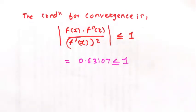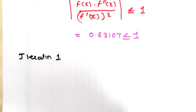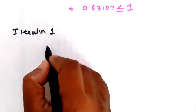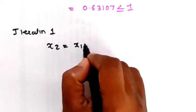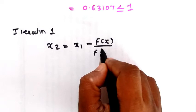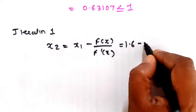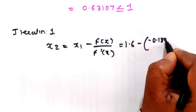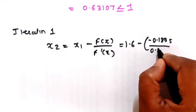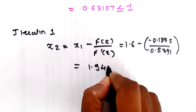Now we go to the iterations. Iteration 1: calculate the new root x₂ using the formula x₂ = x₁ − f(x₁)/f'(x₁) = 1.6 − (−0.1835)/0.5391 = 1.9403.